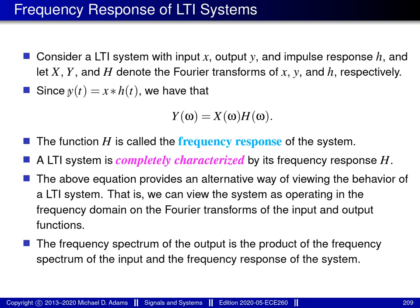We know that the LTI system is governed by an equation where the output little y is equal to the input little x convolved with the impulse response little h. If we take the Fourier transform of this equation using the convolution property, we obtain the equation big Y equals big H times big X, where the function big H is referred to as the frequency response of the system — the Fourier transform of the impulse response.